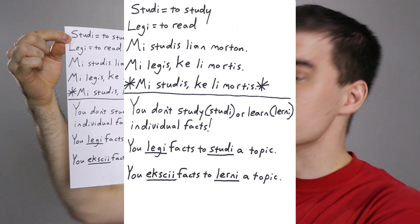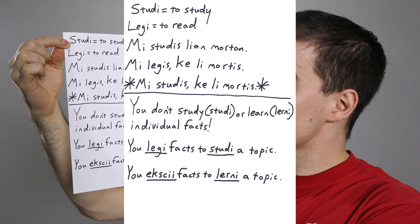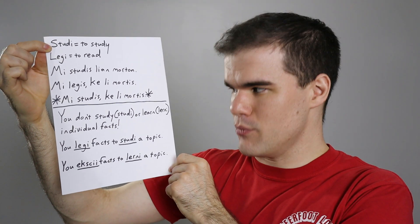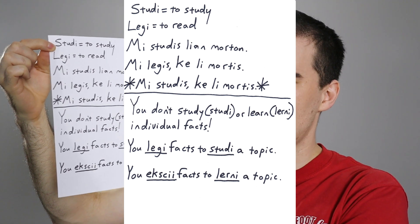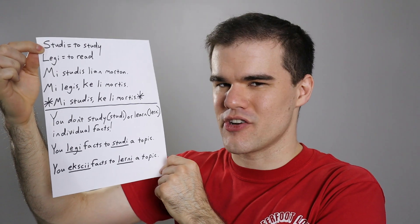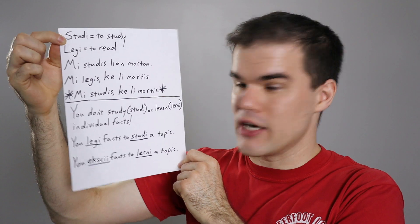How does lerni work? When do we use it? When don't we use it? The easiest way to explain it is to walk away from lerni for a second and show you a different verb with a similar usage. The word I'm talking about is studi — studi is to study. Legi is to read. I could say 'mi studis lian morton' — I studied his death, researching the assassination of Lincoln. And you could say 'mi legis ke li mortis' — I read that he died. But you wouldn't say 'mi studis ke li mortis' — 'I studied that he died.' You don't studi an individual fact. That's why there are asterisks — don't do this.